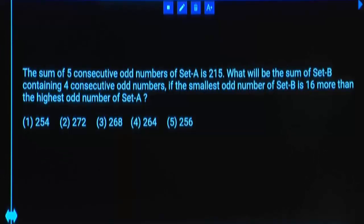Sum of 5 consecutive odd numbers of set A is 215. What will be the sum of set B containing 4 consecutive odd numbers if the smallest odd number of set B is 16 more than the highest odd number of set A?